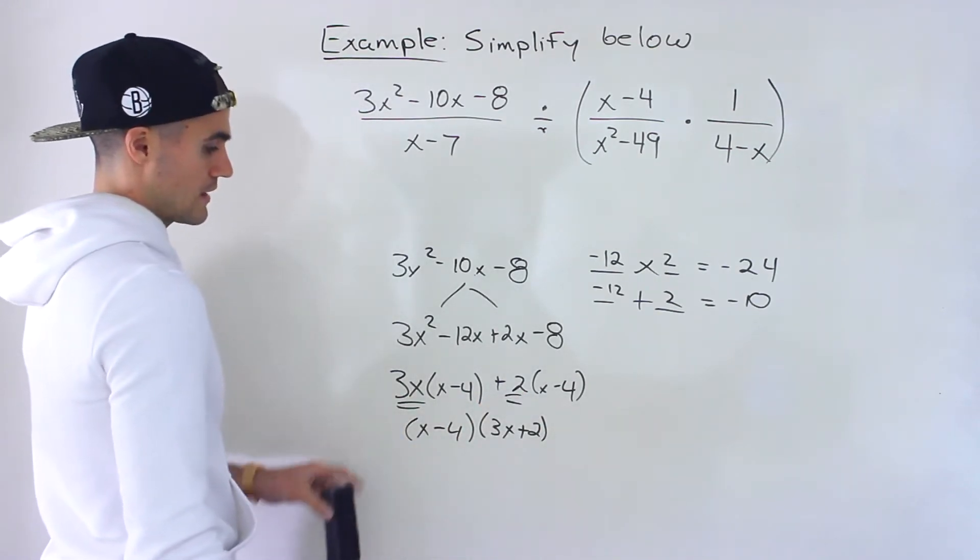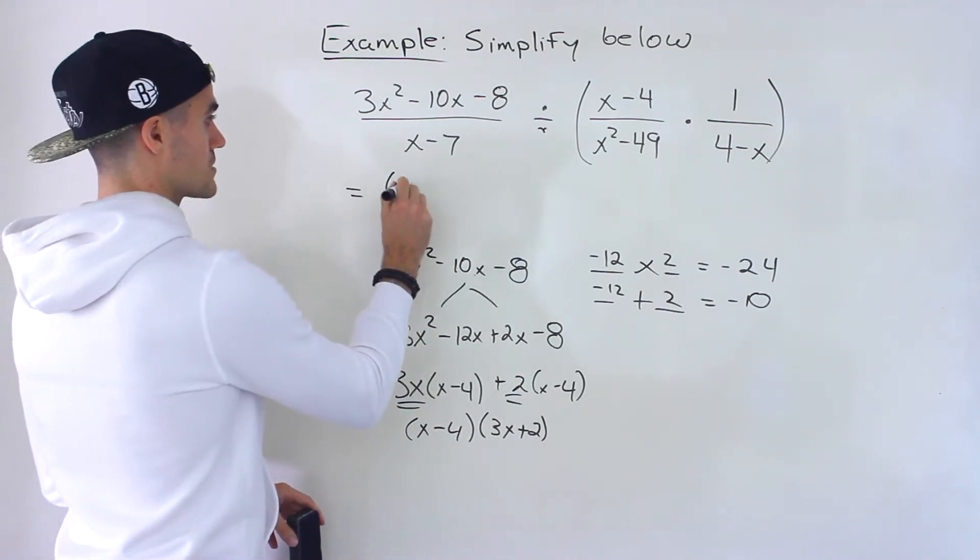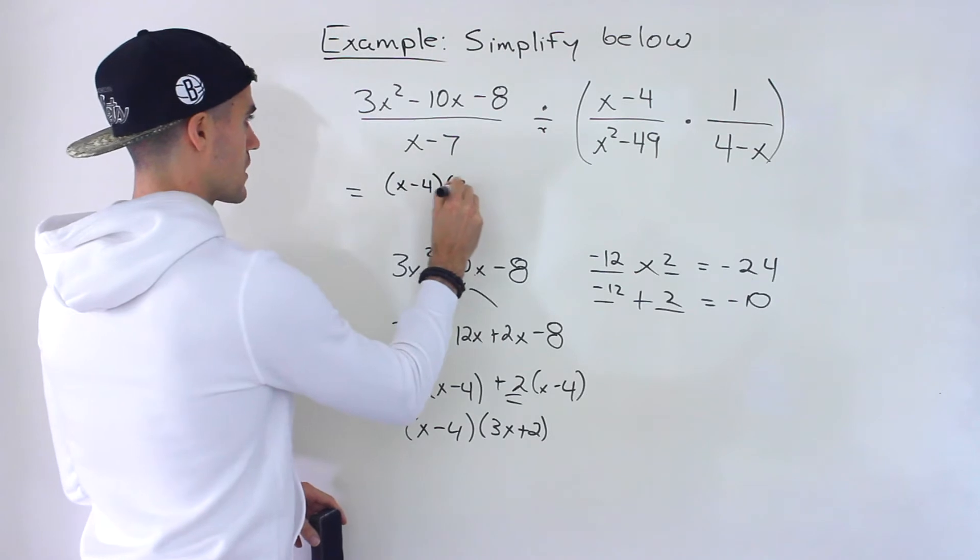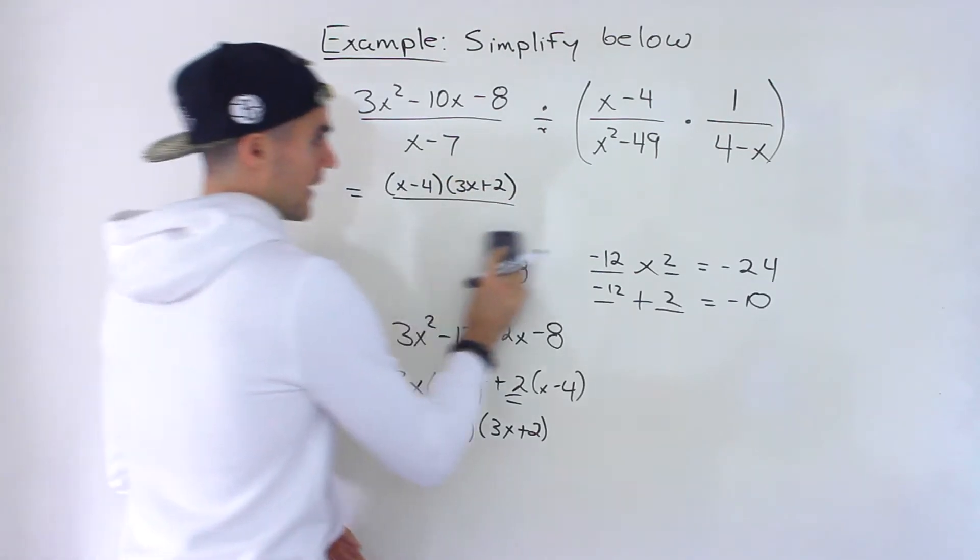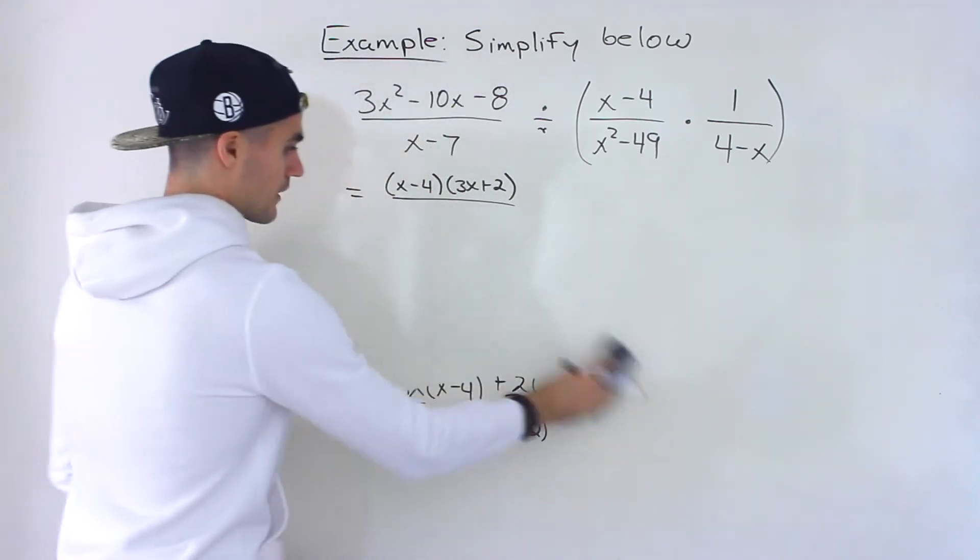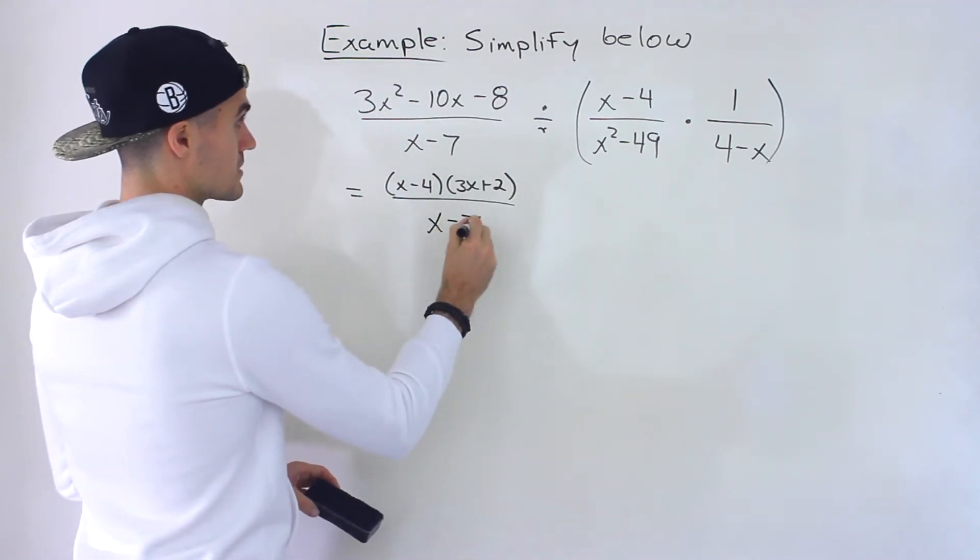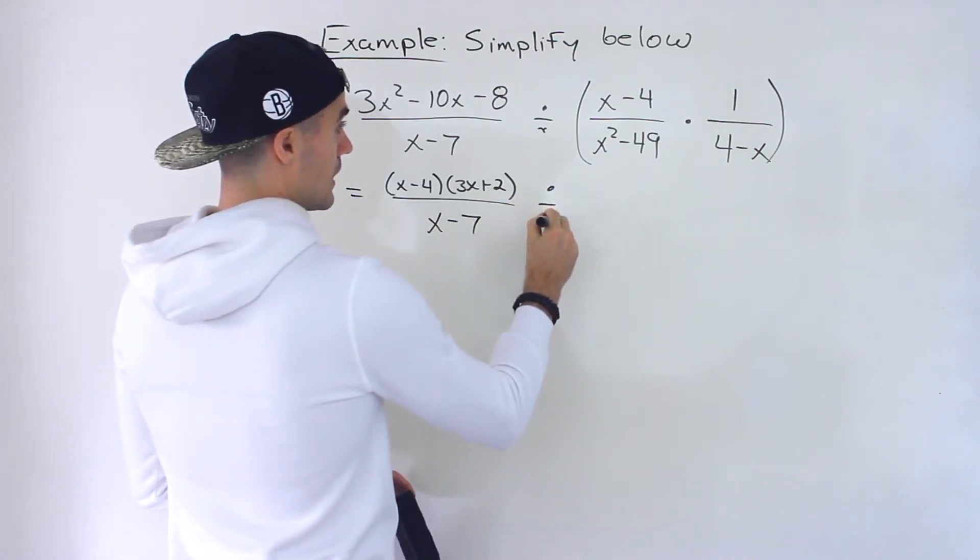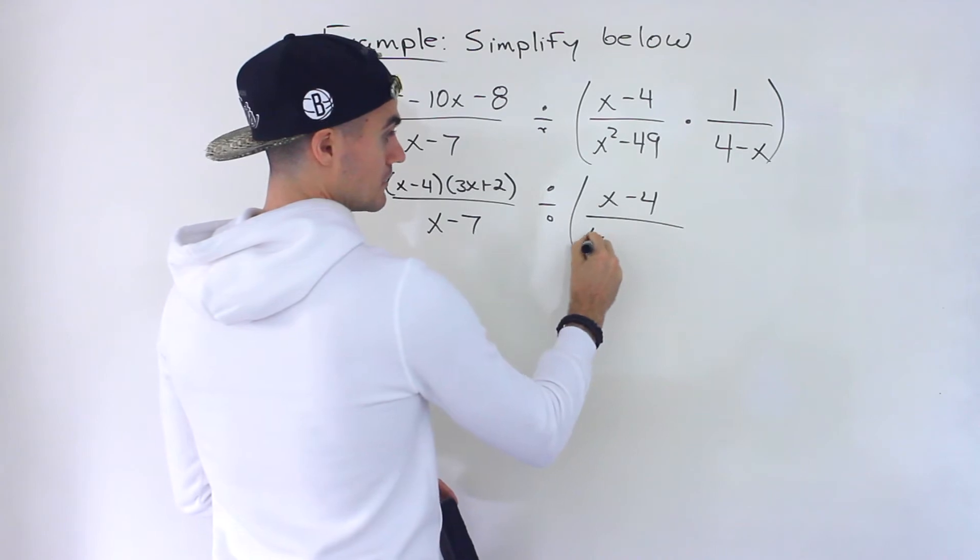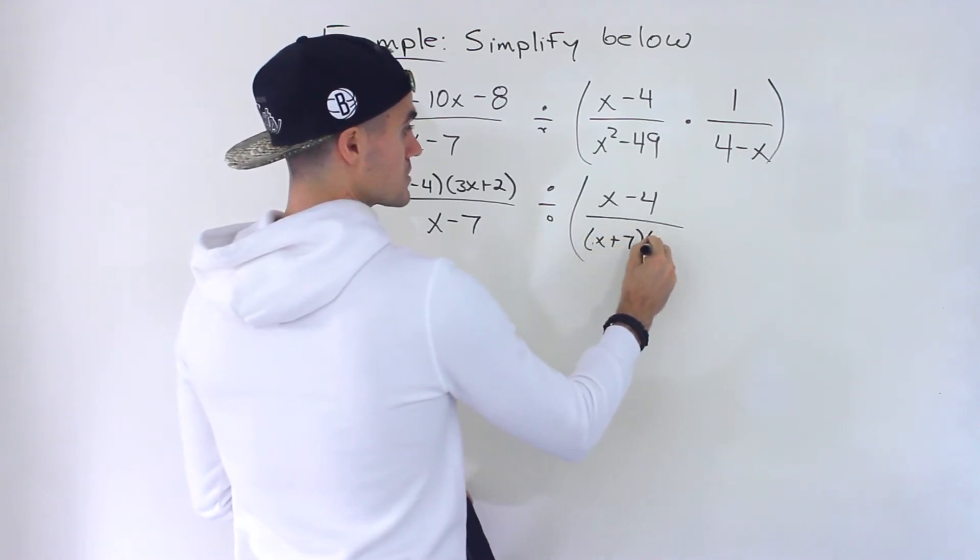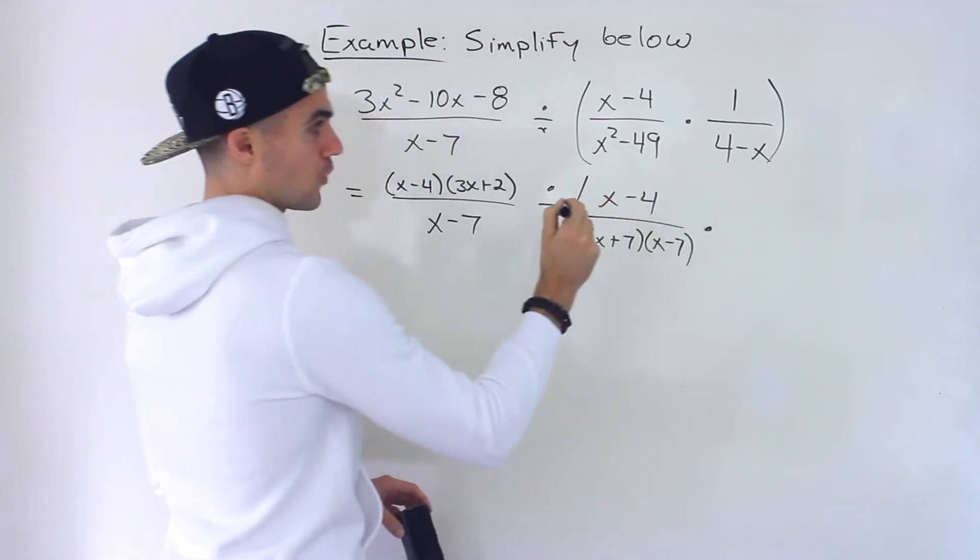All right so that numerator factors into that. So continuing this here we'd have x minus 4 times 3x plus 2. Now the x minus 7 that doesn't factor so let's just keep it as it is. And then we'll have divided by x minus 4 doesn't factor. The x squared minus 49 notice how that's a difference of squares.